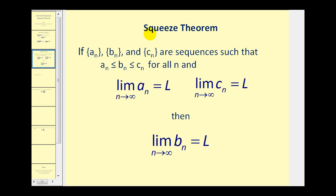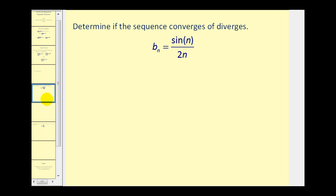One of the major tasks in order to use the squeeze theorem is to determine sequence a and sequence c that sandwich sequence b. Here we have b sub n is equal to sine n divided by 2n. As n approaches infinity, sine of n will alternate between positive one and negative one, and 2n will approach infinity. So we probably have a pretty good idea that this limit is going to converge to zero, but let's go ahead and apply the squeeze theorem.